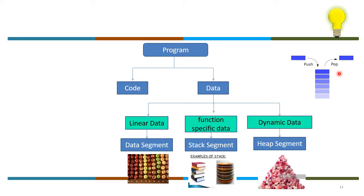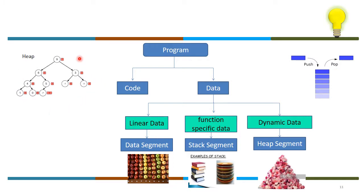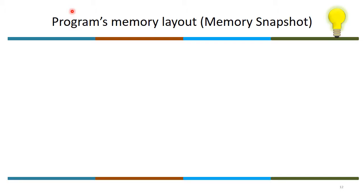In the stack, function-specific data is only relevant when that particular function is being executed. When the function is over, that particular stack frame is popped up. This is how memory in this region is arranged so that the system can manage allocation and deallocation of memory efficiently.